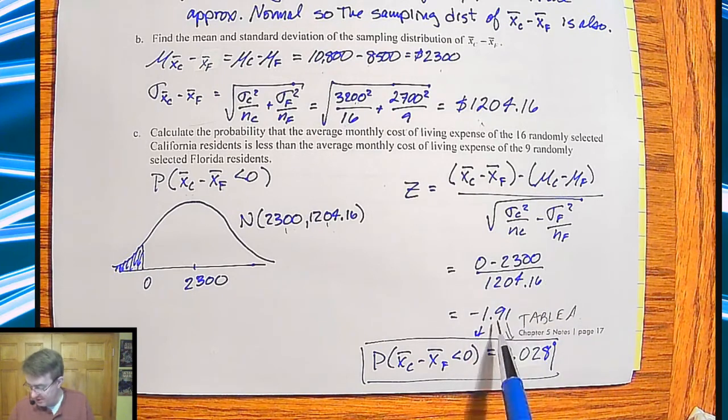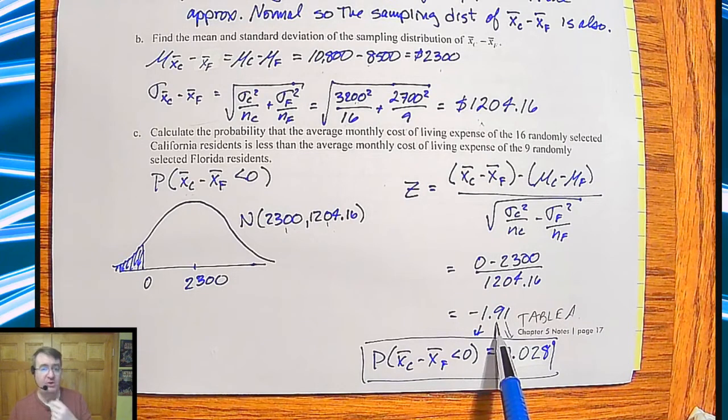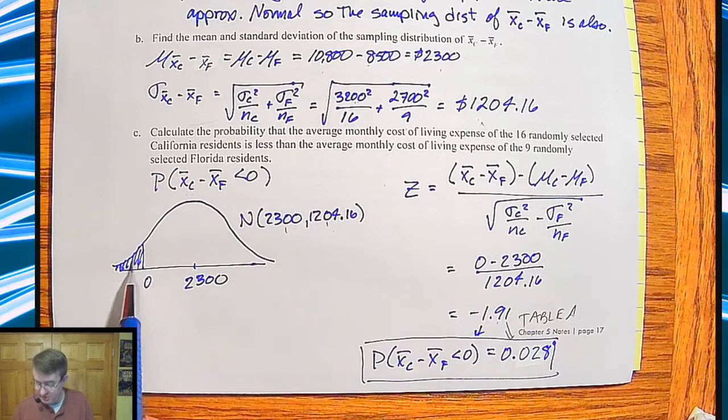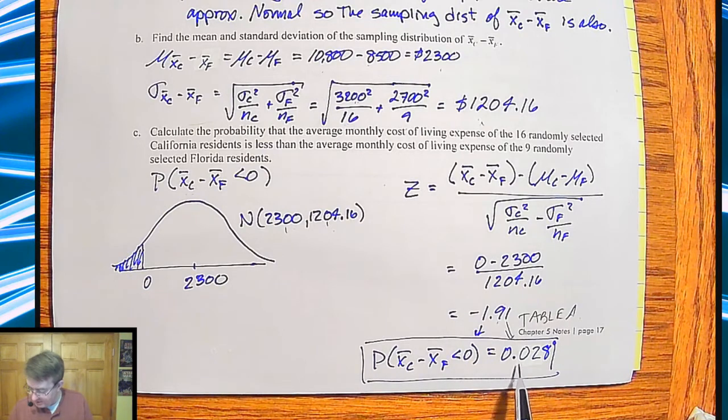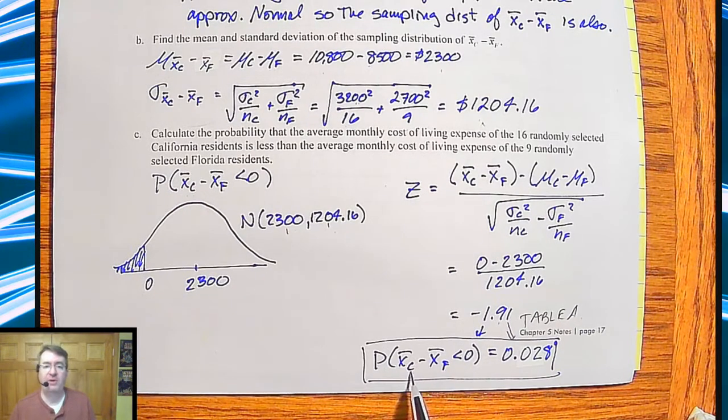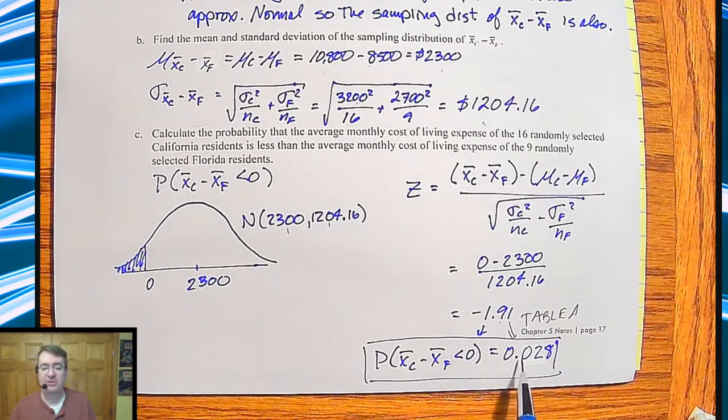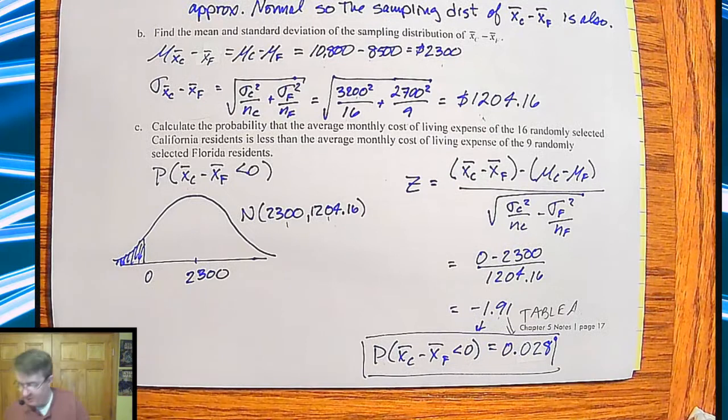So this all becomes, gives you a Z-score of a negative 1.91. So you know it's going to be, since it's almost two, it's going to cover a large part of our population or a very small part of our population, depending on what side we're shading. So in this case here from table A, we end up getting a probability that the difference of the means of cost of living from California to Florida is less than zero. It's going to actually only be 0.028. Technically, there should be another zero back there. So my apologies.